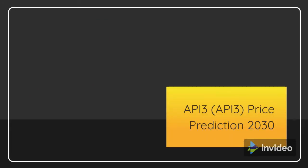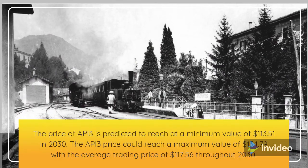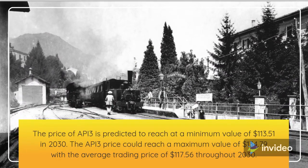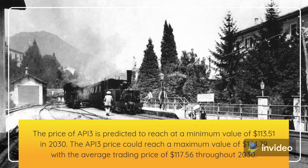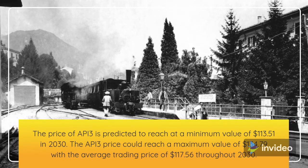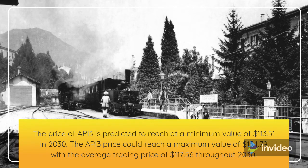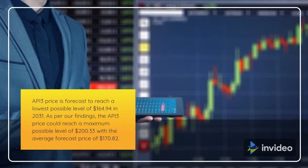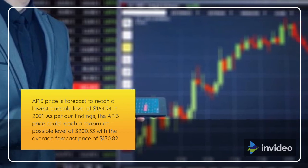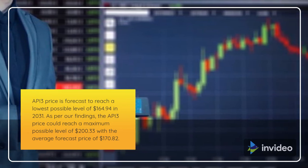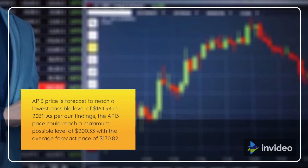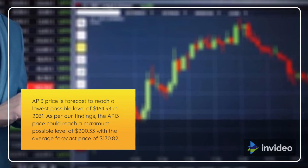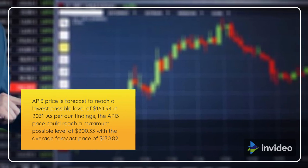API 3 Price Prediction 2030. The price of API 3 is predicted to reach a minimum value of $113.51 in 2030. The API 3 price could reach a maximum value of $134.79 with the average trading price of $117.56 throughout 2030. API 3 Price Prediction 2031. API 3 price is forecast to reach a lowest possible level of $164.94 in 2031. As per our findings, the API 3 price could reach a maximum possible level of $200.33 with the average forecast price of $170.82.